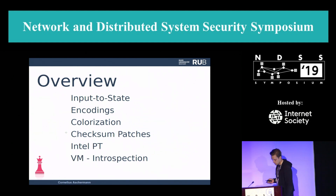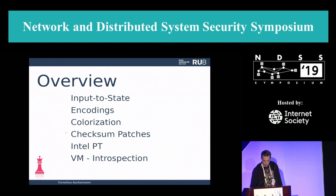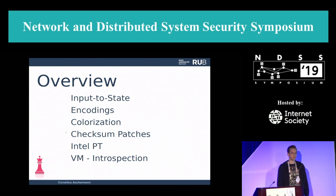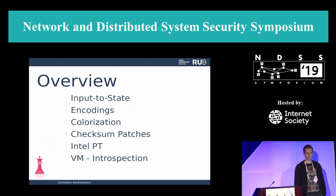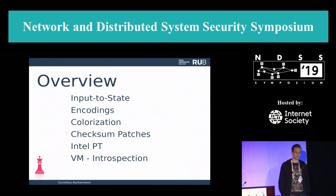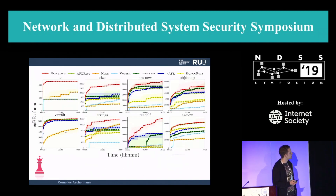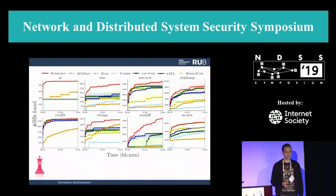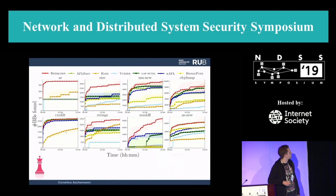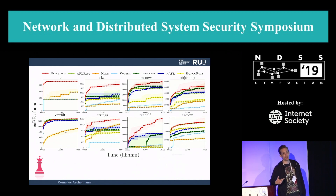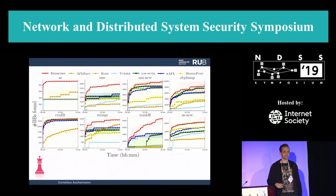That's it from my side. This is just an overview — if you have any questions, please feel free to ask. [Q: In your evaluation, there were a couple of programs where Red Queen wasn't really improving, like CXXField. Can you comment on why?] Red Queen only solves specific kinds of issues — magic byte issues. CXXField is a program that takes mangled C++ symbols and turns them into plain symbols, and there are simply no magic bytes involved — it's just one-byte checks all the time, so we cannot really add anything there.